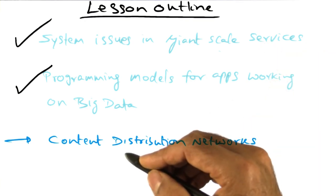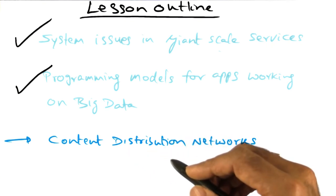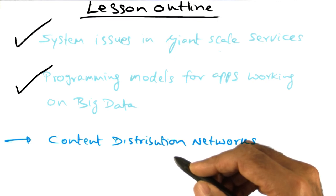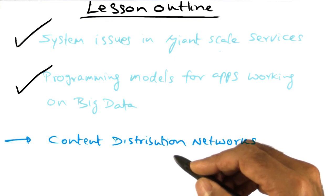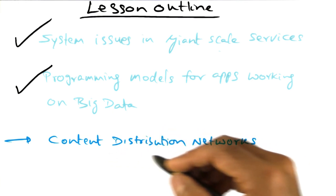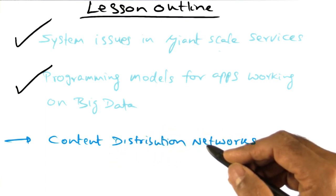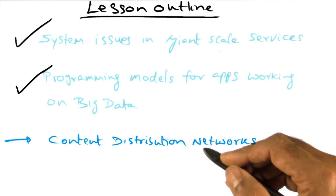In this lesson, we look at content distribution networks. That is, how is information organized, located, and distributed when we are looking for them? Once again, the issue is dealing with the scale of the problem. The content is generated worldwide, and users are trying to access the content worldwide as well.